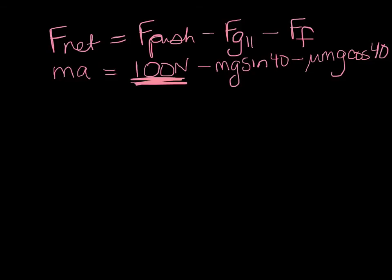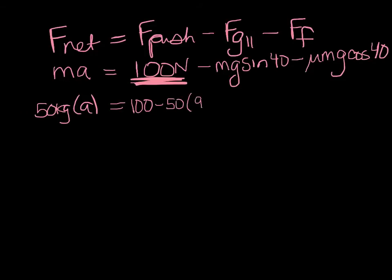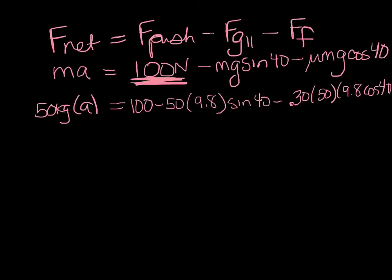We have a 50-kilogram box, so: 50 times acceleration equals 100, minus 50 times 9.8 times sine 40 degrees, minus 0.3 times 50 times 9.8 times cosine 40 degrees. Everything in our problem is now just numbers. Go ahead and punch in all the numbers — pause the video and make sure your answer matches mine.